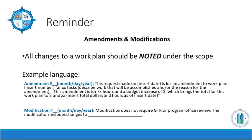A reminder on modifications and amendments: when recipients submit amendments or modifications, they must list in the scope the date, the changes to the work plan, and the reason or justification for the change in both the portal and DRGR. The SOPs provide template language that must be used by recipients. More information on what constitutes a modification versus an amendment can be found in the SOPs in the section that covers procedures for submitting work plan amendments and modifications.